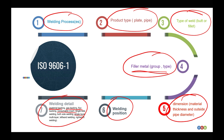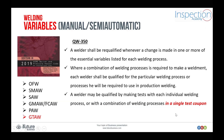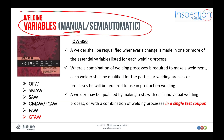Basically, both ISO and ASME codes have the same essential variables from different points of view. In our next session, we will talk about welding variables for manual and semi-automatic welding processes in detail according to ASME Section 9. See you soon!